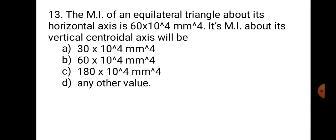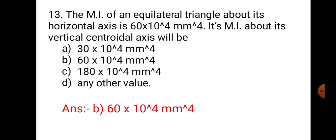Question number 13. The MI of an equilateral triangle about its horizontal centroidal axis is 60×10⁴ mm⁴. Its MI about its vertical centroidal axis will be: A. 30×10⁴ mm⁴, B. 60×10⁴ mm⁴, C. 180×10⁴ mm⁴, and D. Any other value. For an equilateral triangle, which is symmetrical about the vertical axis, all sides are equal and all angles are 60°. Hence I_XX and I_YY are equal. Therefore, MI about the vertical axis is also 60×10⁴ mm⁴. Hence, the correct answer is B. 60×10⁴ mm⁴.